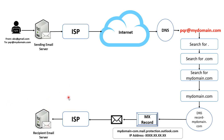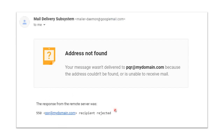The recipient email server then routes the email to the correct recipient. The sender is abc@gmail.com and the recipient is pqr@mydomain.com. The recipient email server looks for a user with the email address pqr@mydomain.com. If that recipient exists, the email is delivered. If not, a bounce-back email — also called an NDR or Non-Delivery Report — is sent back to abc@gmail.com. This NDR is generated when the sender typed a wrong email address or when the recipient email address does not exist.